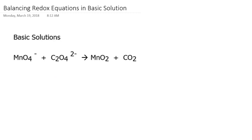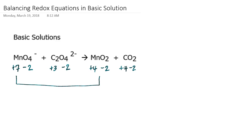Now what about doing this same operation in basic solution? The process is very similar with one slight change at the end. The oxidation numbers for this equation are: oxygen −2, manganese +7 in permanganate; oxygen −2 and carbon +3 in oxalate; oxygen −2 and manganese +4 in MnO₂; oxygen −2 and carbon +4 in CO₂. Manganese goes from +7 to +4 — a reduction process involving 3 electrons. Carbon is being oxidized in a process involving 1 electron.